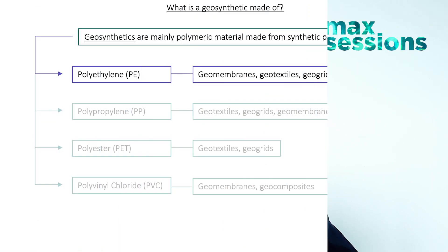Geosynthetics are mainly polymeric type materials, although sometimes natural materials are added into the product. Most of the time they are exclusively made from synthetic polymers. For example, polyethylene (PE) is used to make geomembranes, geotextiles, geogrids, geonets, and geocomposites.